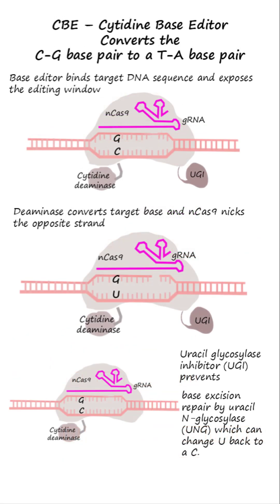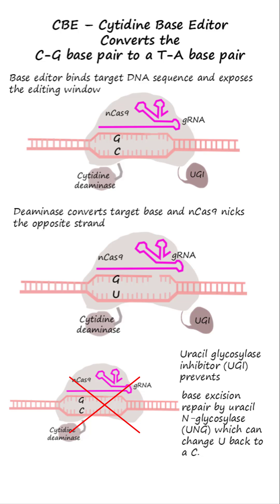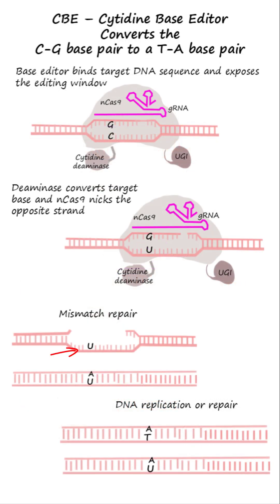The cytidine deaminase, fused to the N-terminus of the nCas9 protein, modifies cytosine to uracil directly — that is, without a donor template. The inhibitor of uracil DNA glycosylase, integrated with nCas9 at the C-terminus, prevents base excision repair by uracil DNA glycosylase, which would otherwise change the uracil back to a cytosine base. The uracil is then converted to thymine through DNA repair or replication.